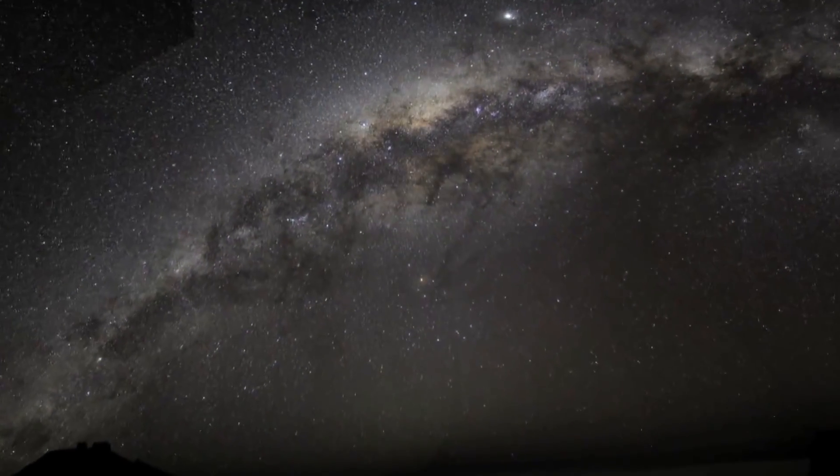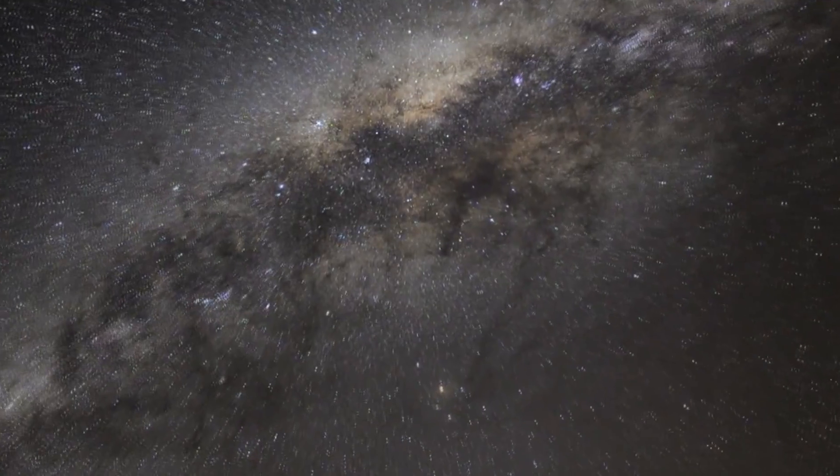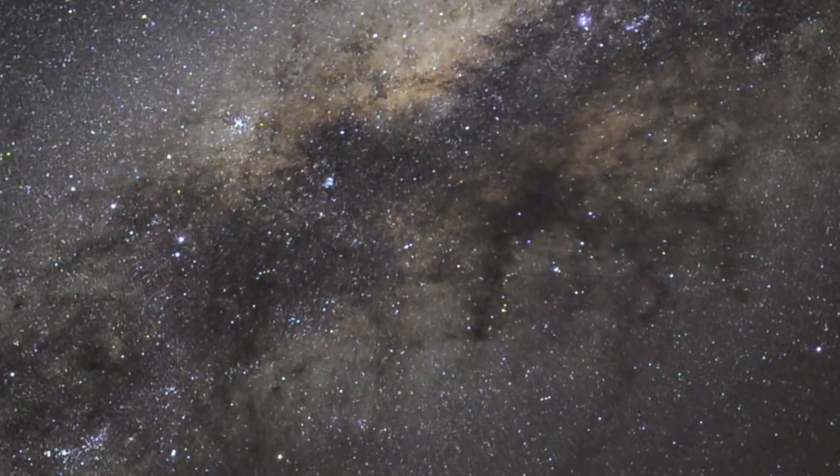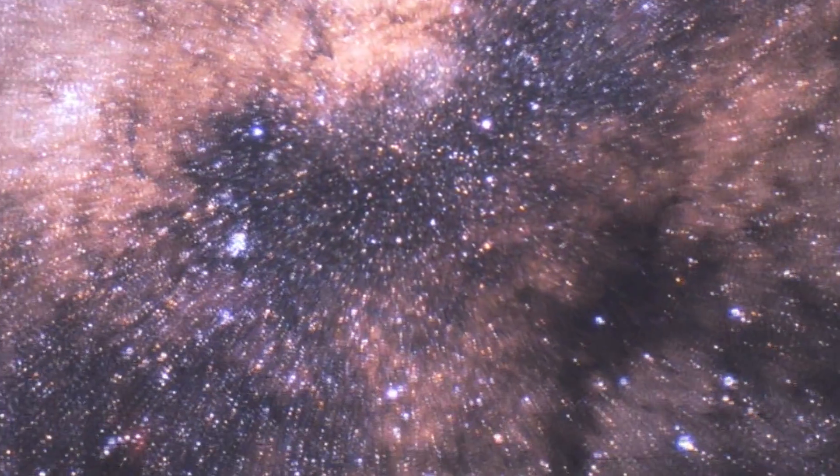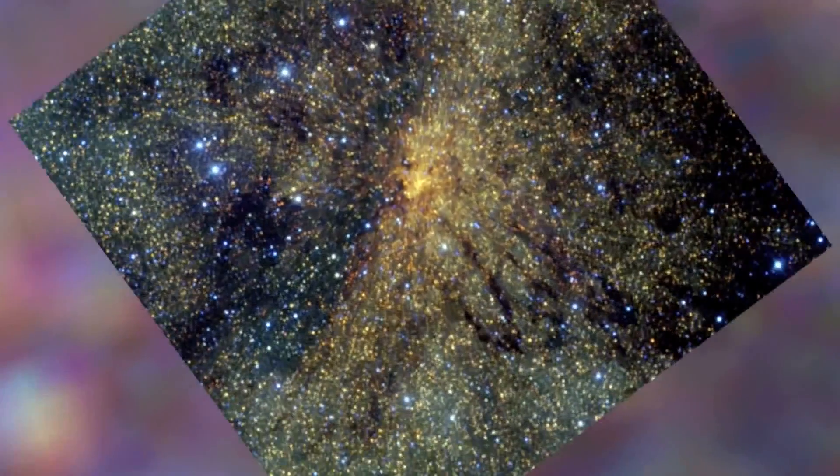Observers under dark skies far from the bright city lights can marvel at the splendor of the Milky Way arching in an imposing band across the sky. Zooming in towards the center of our galaxy, about 25,000 light years away, you can see that it is composed of myriads of stars.